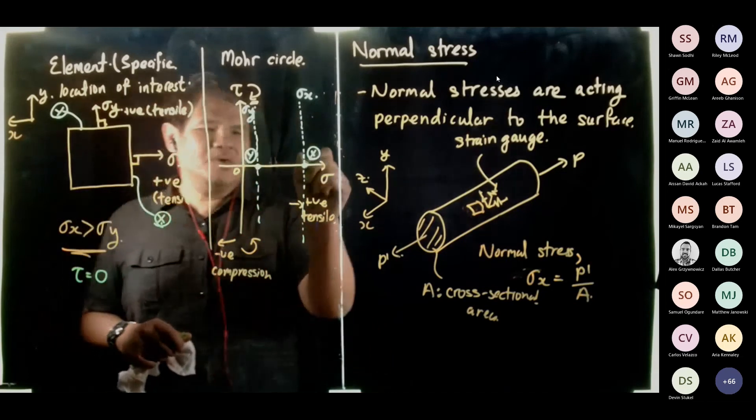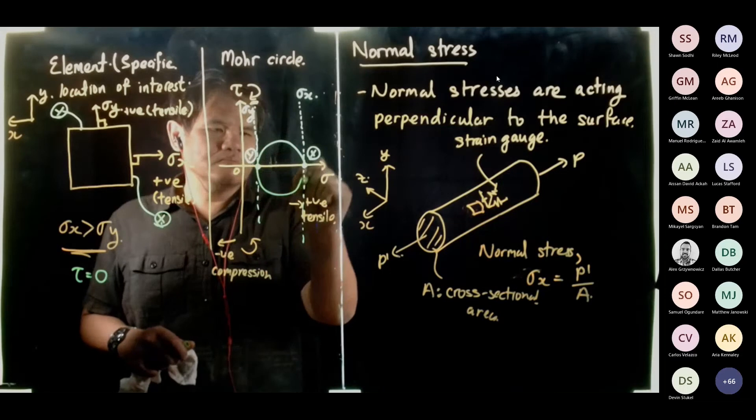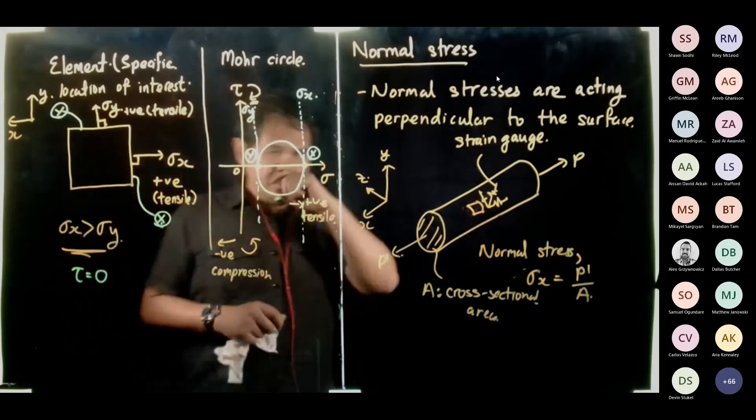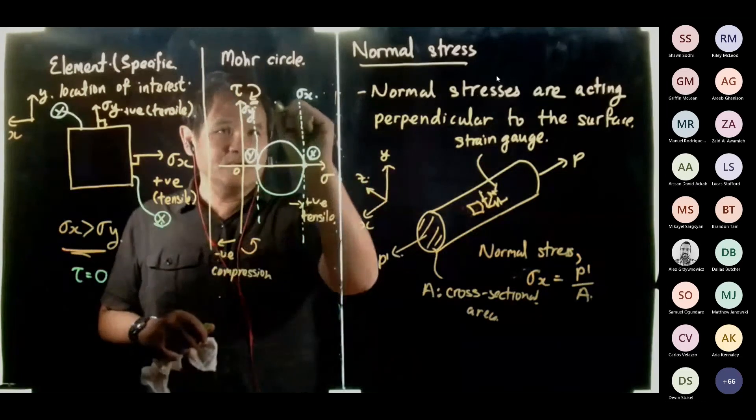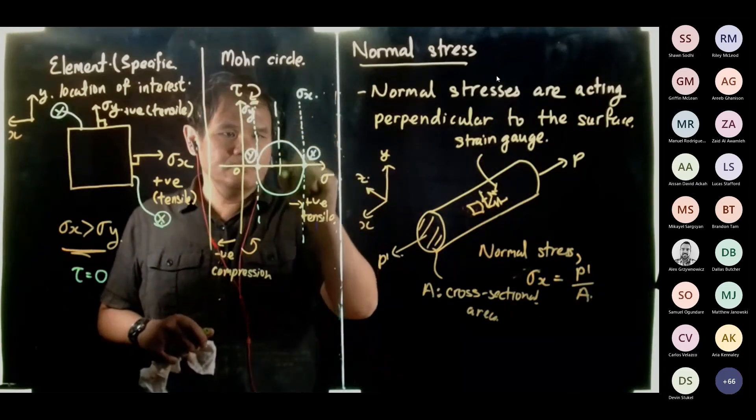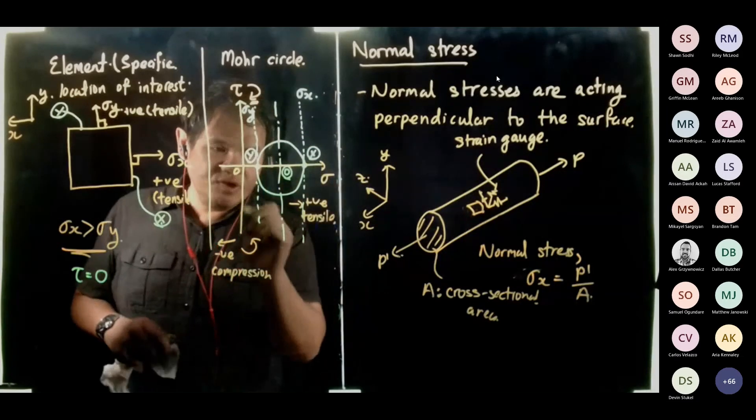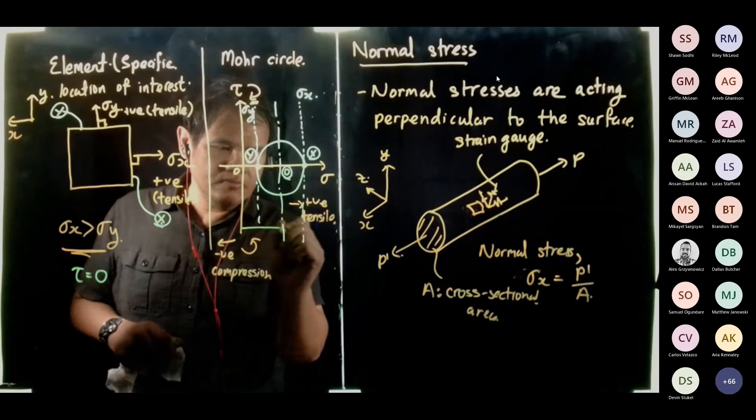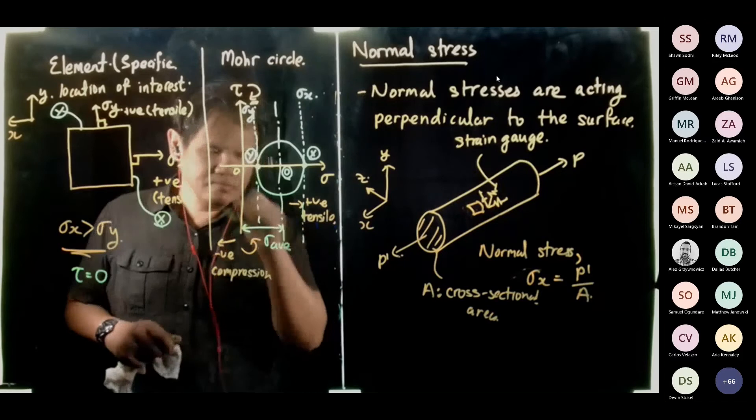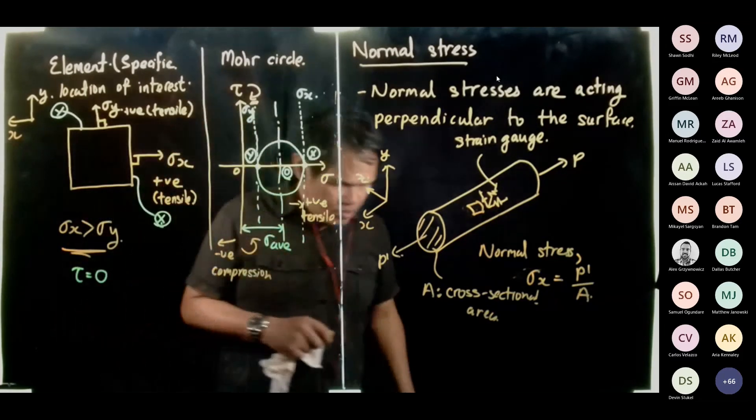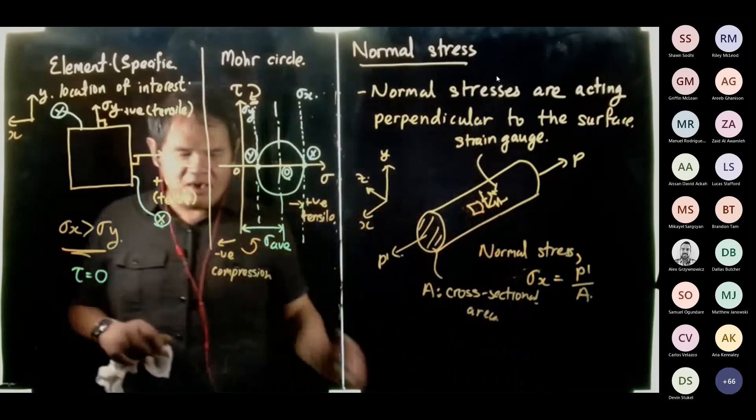From here, you can take your compass, you can draw a circle. And then at your circle, this is the center of your circle, which is your point O. From zero to point O, this is known as your stress average. From zero to the center, that is your point, or your stress average.